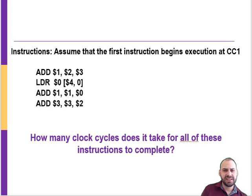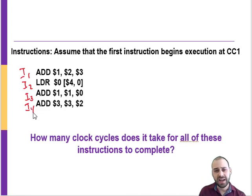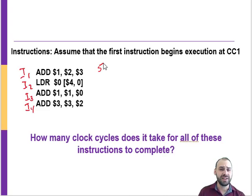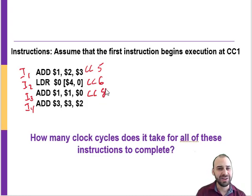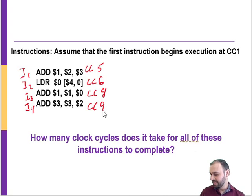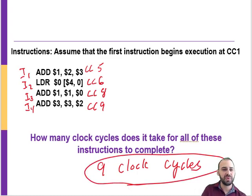How many clock cycles does it take to complete everything? It takes one more than normal. Normally with four instructions the first finishes at clock cycle 5, the load at clock cycle 6, but the ADD gets delayed by the stall and finishes at clock cycle 8, and the last instruction finishes at clock cycle 9. So the whole sequence takes nine clock cycles — just one more than normal because of the stall.